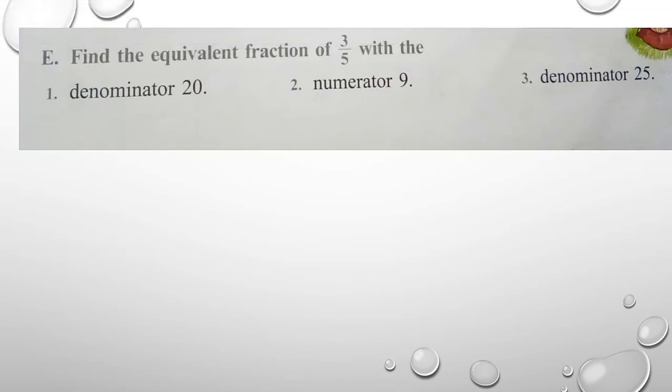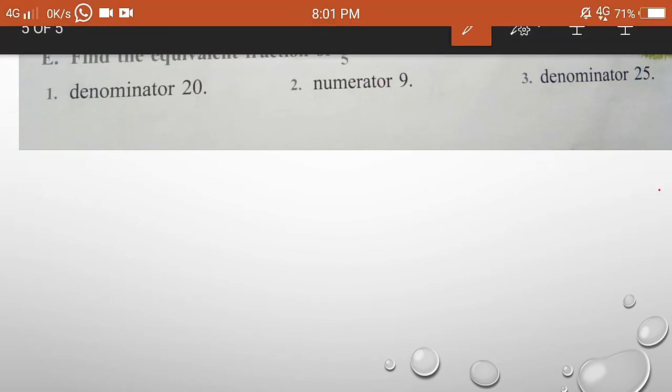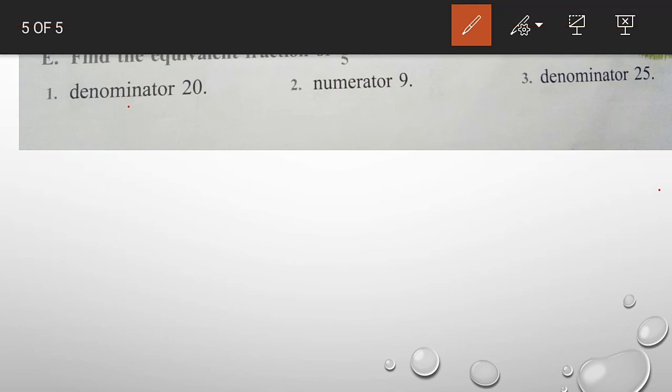Now your D exercise is done. We will do E exercise. Find the equivalent fraction of 3 by 5 with denominator 20. Let's start. Here we want denominator as 20. First we write down 3 by 5 equal to denominator 20.